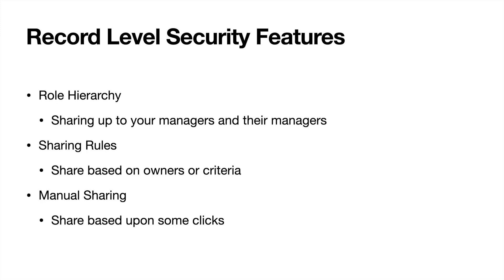Role hierarchy mimics your company's org structure — you've got your CEO, C-suite or board members, VPs underneath them, directors, then managers, and then reps. Role hierarchy rolls up access to records of anyone underneath you. So if we've got three sales reps underneath one sales manager, all of their leads and opportunities are accessible by their manager, and their manager's manager, going all the way up. But it doesn't work laterally — sales rep one can't see sales rep two's records unless it's shared through other means. This also works higher up: director one can't see director two's records or any of the people underneath director two unless shared through other means.